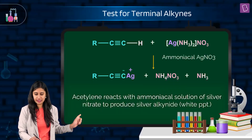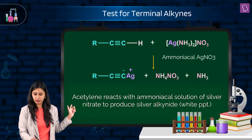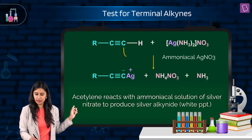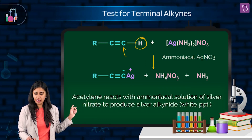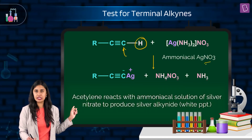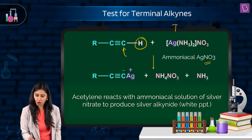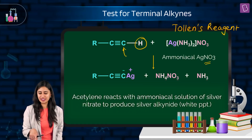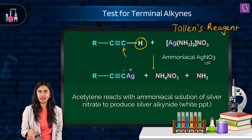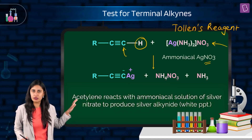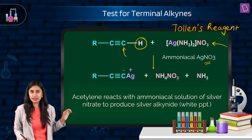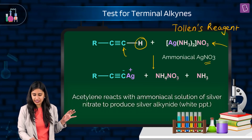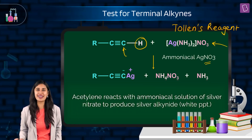We are taking the terminal alkyne — what is your acidic hydrogen? Terminal alkyne with ammoniacal silver nitrate. Sometimes you might also see Tollen's reagent written — do not get confused, both are the same. Tollen's reagent or ammoniacal silver nitrate: acetylene reacts with ammoniacal solution of silver nitrate to produce silver alkynide.